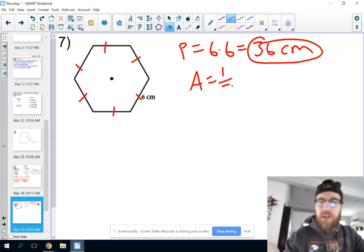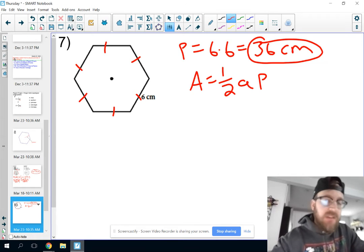So our perimeter of 36 centimeters. So since we have the perimeter already, we should use the formula 1 half times apothem times perimeter. But our issue is we don't have the apothem. So what we need to do here is try and figure that out.